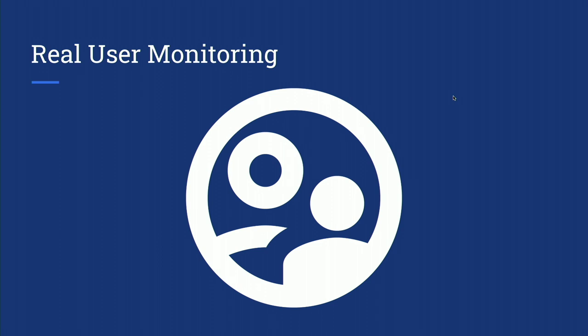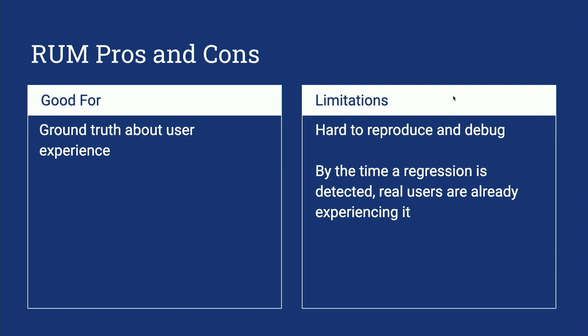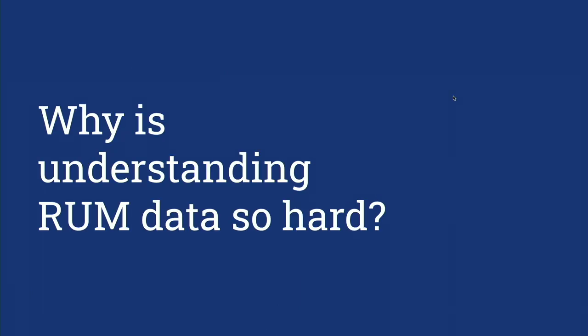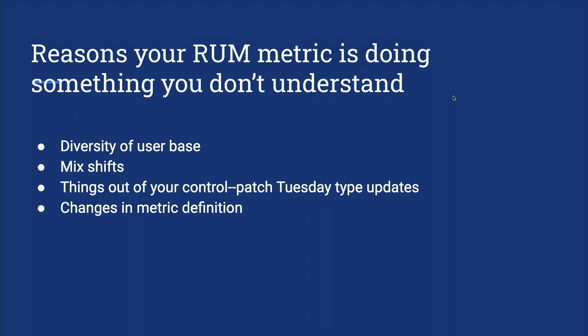Now the last part: real user monitoring. The good thing about real user monitoring is it's the absolute ground truth for what the user experience is, as well as your metrics can measure it. But it's really hard to reproduce and really hard to debug, and by the time you've detected a regression, your users are already feeling that pain. Why is this so hard? Your user base is very diverse — maybe just a subset of the population has experienced a problem, but it's hard to tease that out. There are mix-shift effects: similar to opt-in bias, you could have some kind of bias in your population. For example, if a new country comes online and they have lower-end devices, as those people come online your performance numbers might slowly get worse. There are also lots of things out of our control — on Chrome, Patch Tuesday throws a wrench in everything on Windows, and people restarting their computers also has an effect on performance.